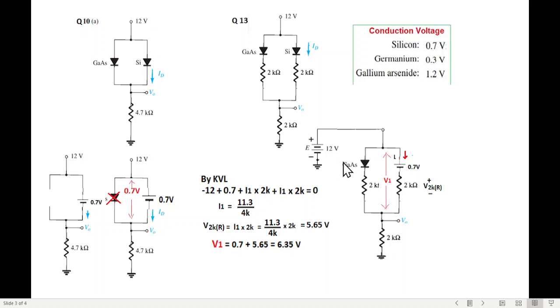Now 6.35 here is good enough to turn this on because this only requires 1.2 volt, and therefore this diode will also conduct in this case. So that's the difference between the two.